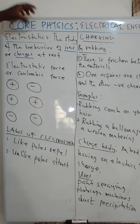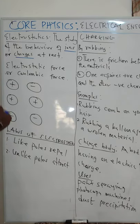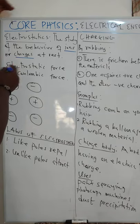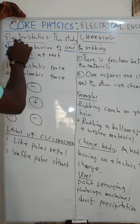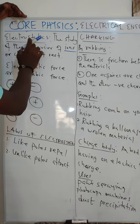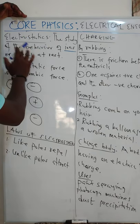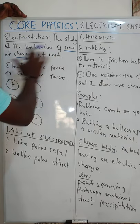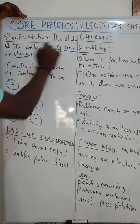Now I want to start off with what we call electrostatics. Electrostatics is coming from two different words. We have 'electro' representing electricity and then 'statics.' If we say something is static, it means that it is stationary. So electrostatics is dealing with the study of the behavior of ions or charges at rest.